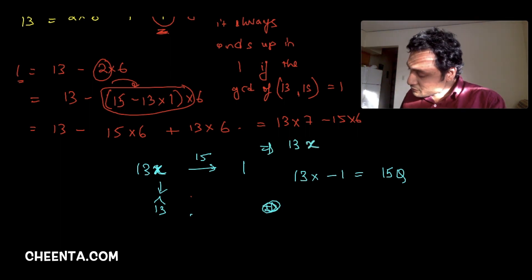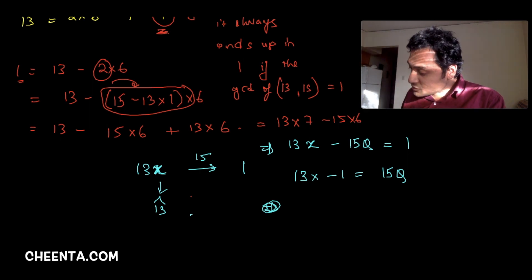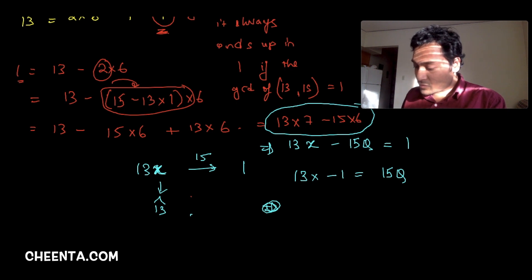Or maybe I can write it here: 13x minus 15q would be equal to 1. So this is the final equation that we are interested in. And see, we actually found such a thing here: 13 times 7 minus 15 times 6 is equal to this 1.